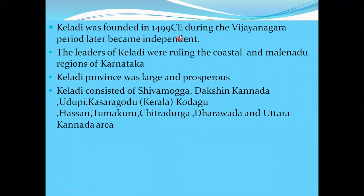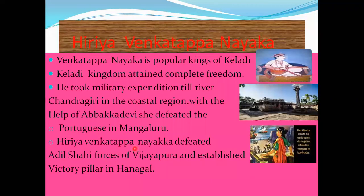Keladi was founded in 1499 CE during the Vijayanagara period and later became independent. The leaders of Keladi ruled the coastal Malanadu region. The Keladi province was very large and prosperous, consisting of Shimoga district and areas including Dakshina Kannada, Udupi, Kasaragod, Kerala, Kodagu, Hassan, Tumkuru, Chitradurga, Dharwad, and Uttara Kannada.